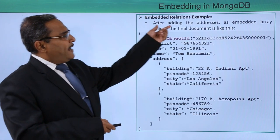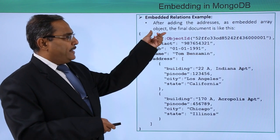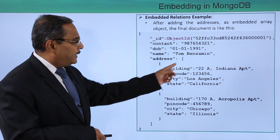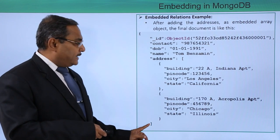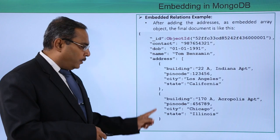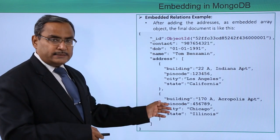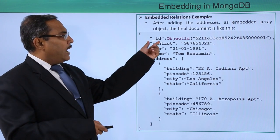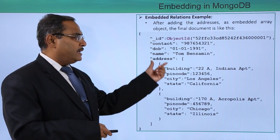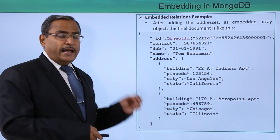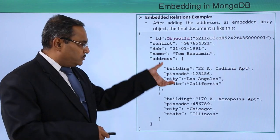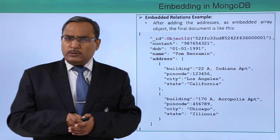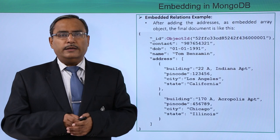After adding the addresses as an embedded array object, the final document will look like this. By defining one array containing JSON objects, you can find that these two documents have been embedded in the parent document. The parent document has ID, contact, date of birth, name, and address — where address contains an array of JSON objects: one object and another object. In this way, we have discussed how embedding can be done in MongoDB.